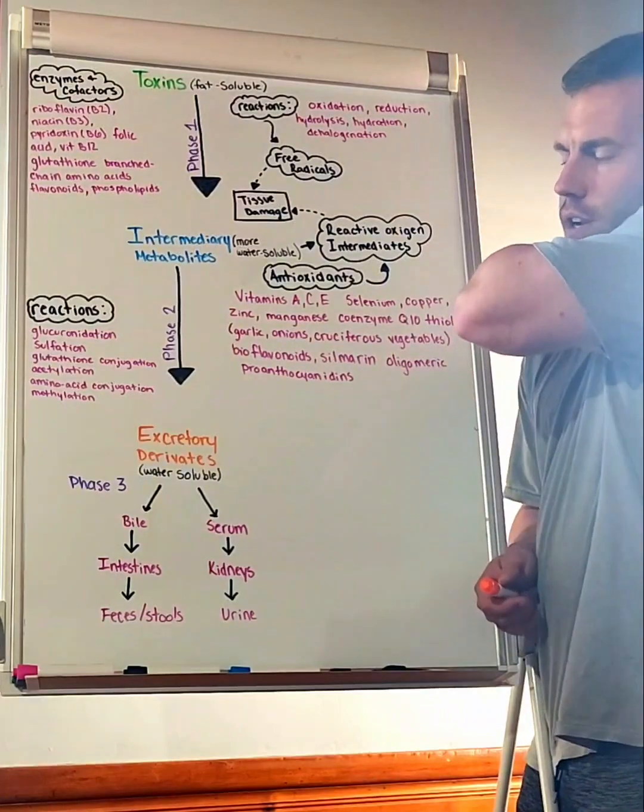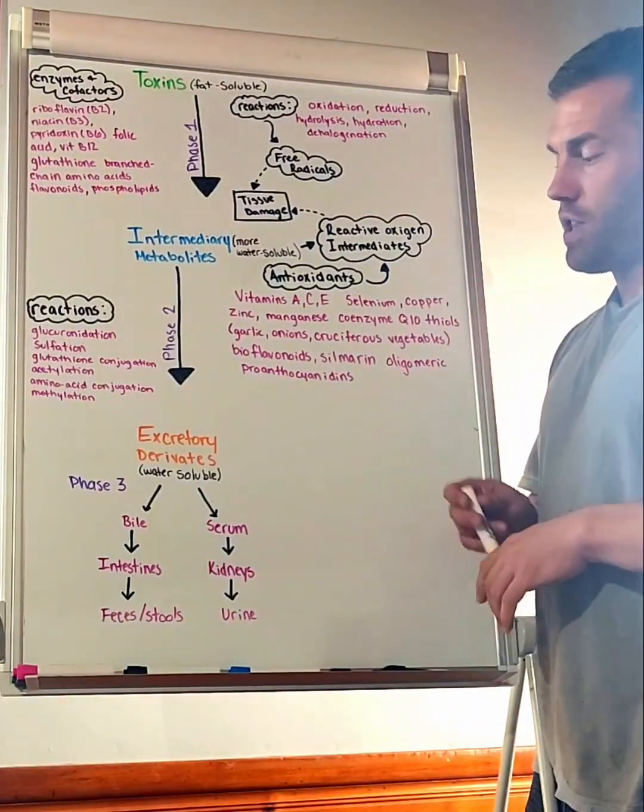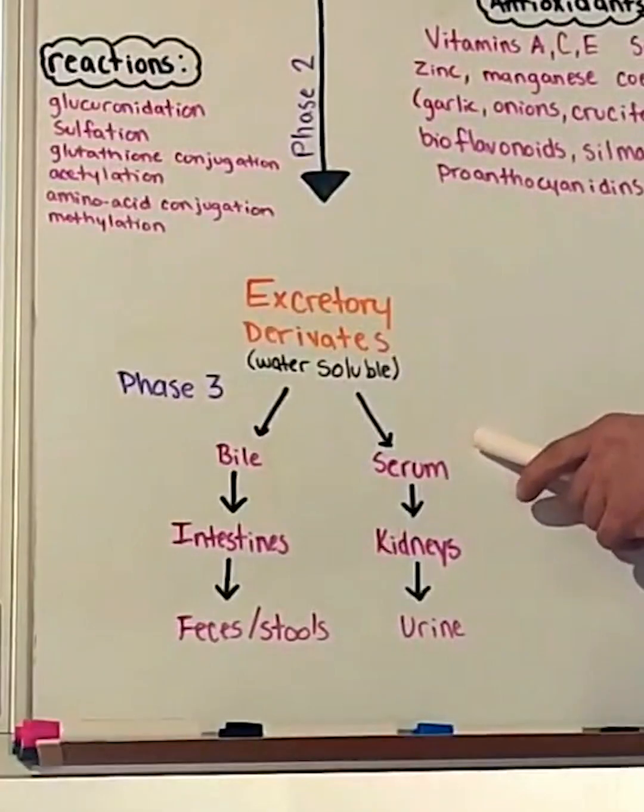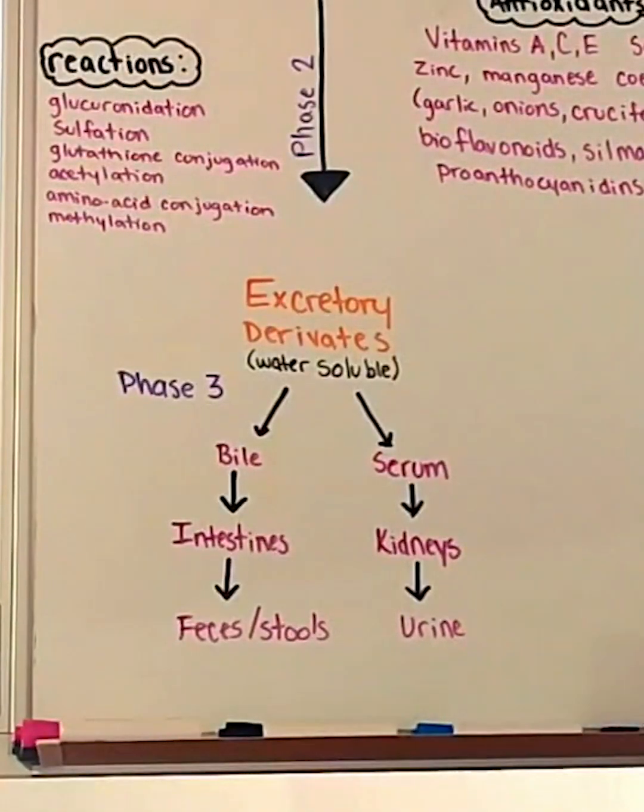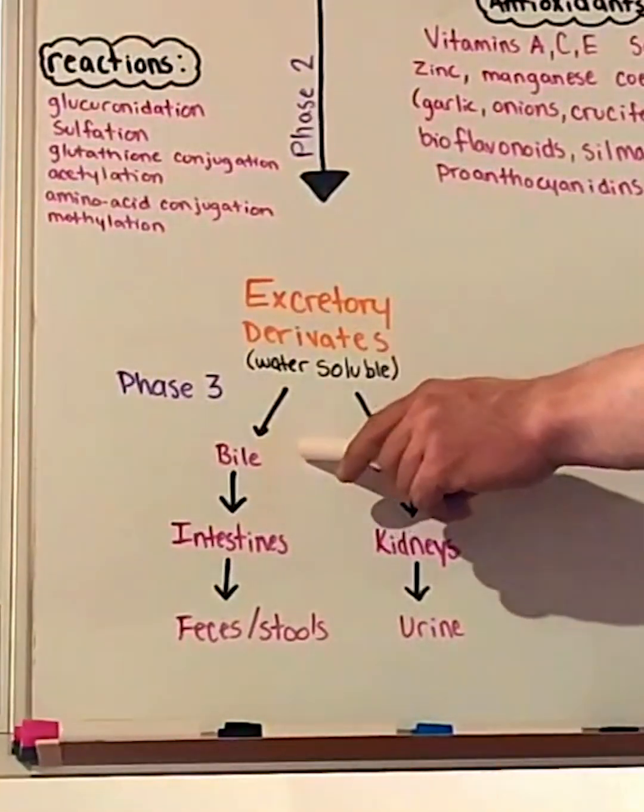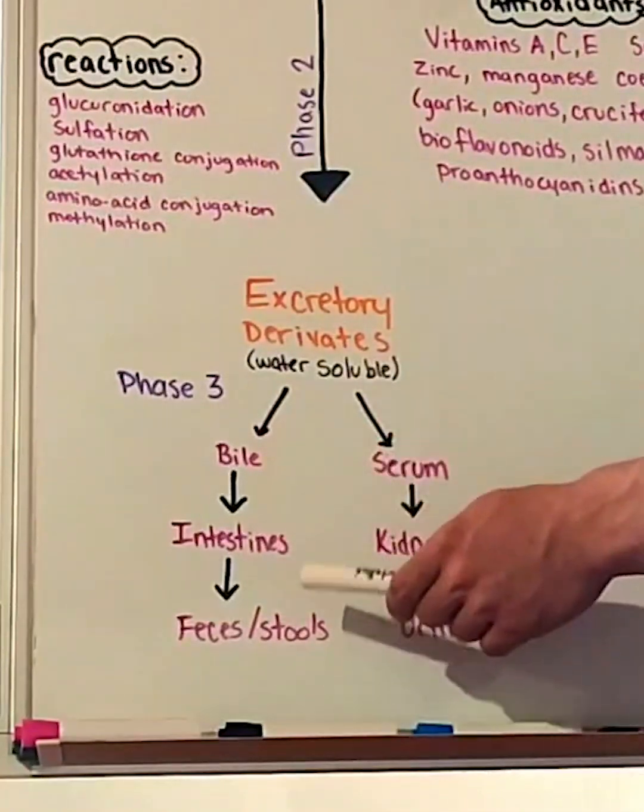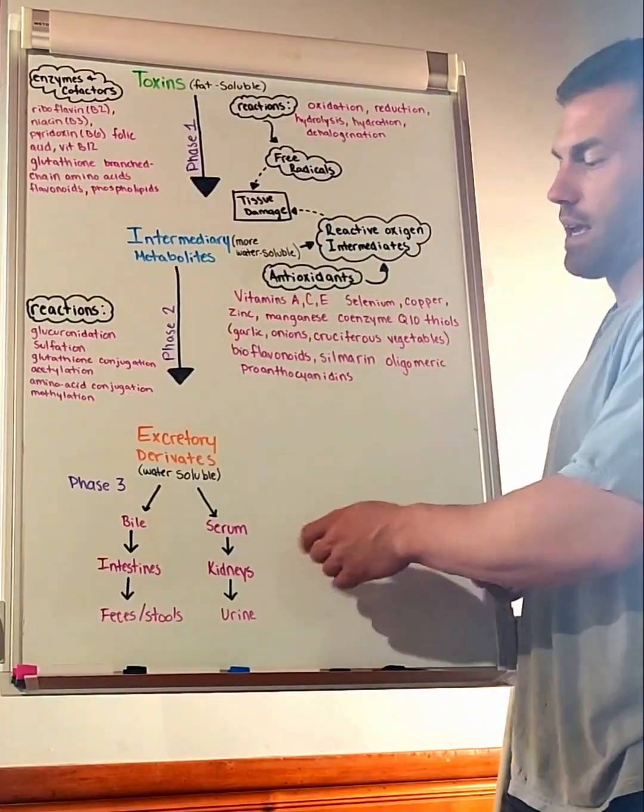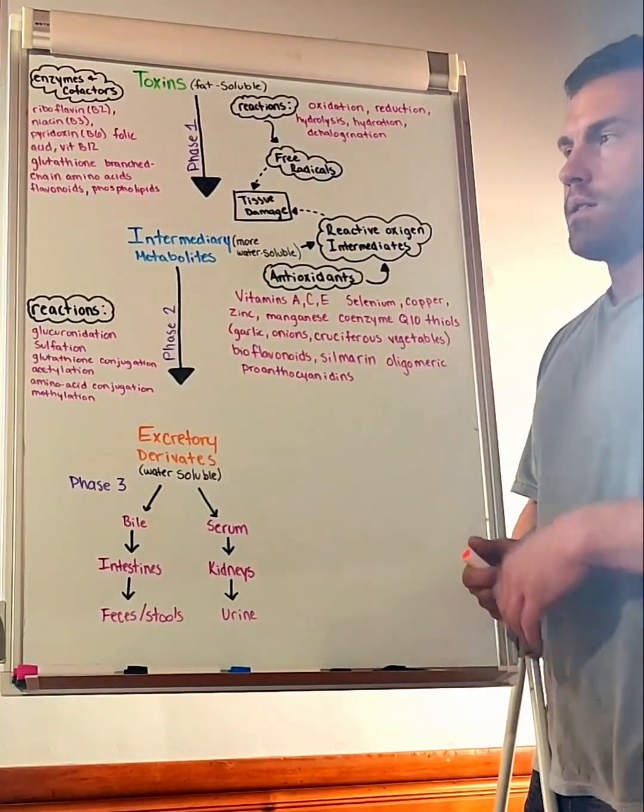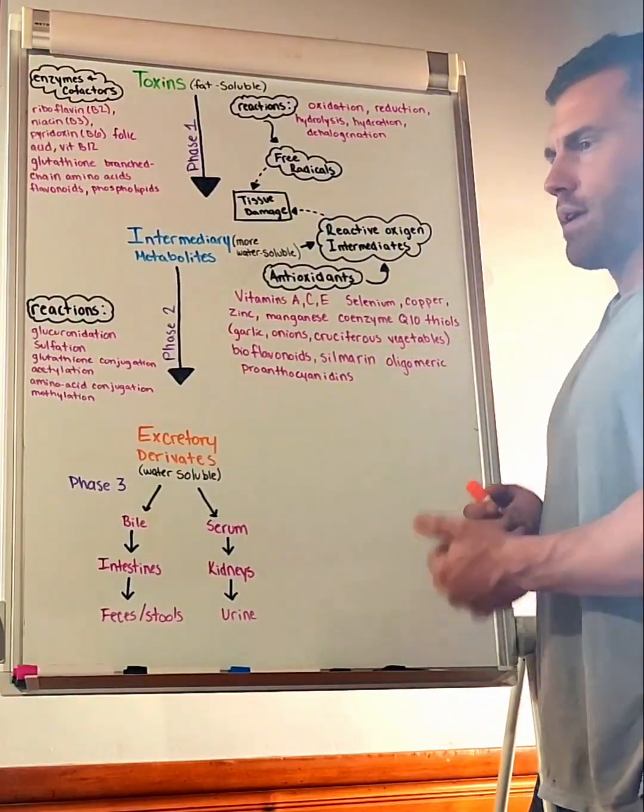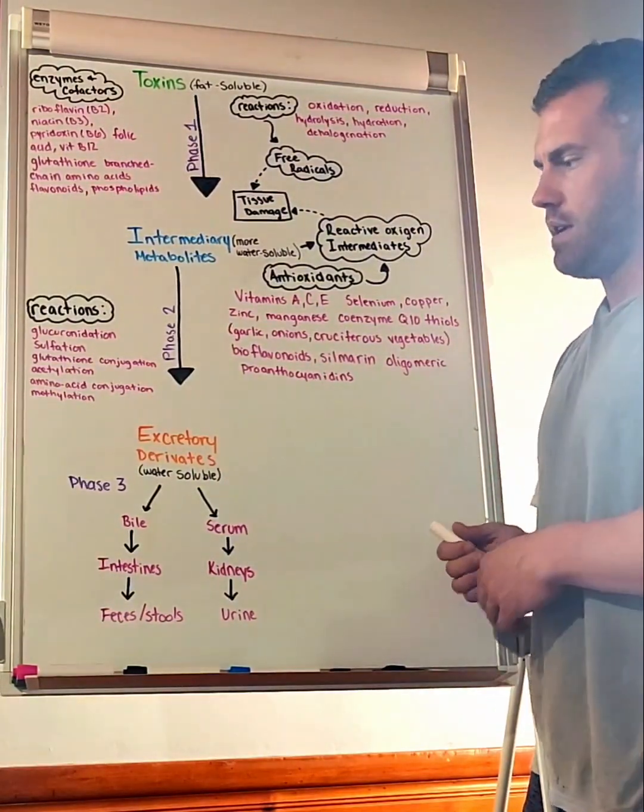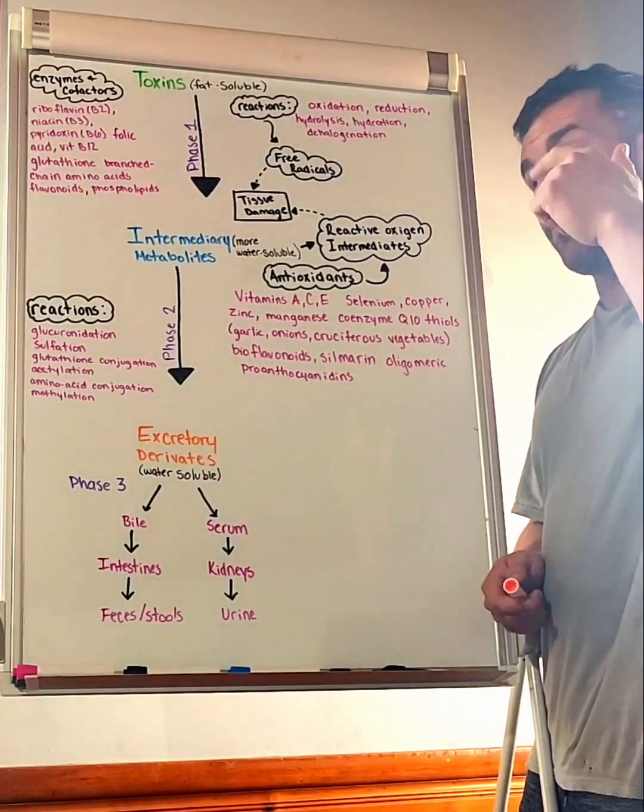We can push them down a few pathways: we can go through the kidneys to the urine, or we can go through the intestines using bile and enzymes to get to feces or stool. The two main places that we are ridding ourselves of these end products are through urine and through stool.